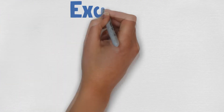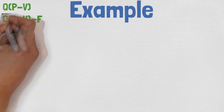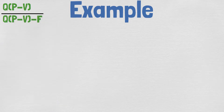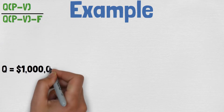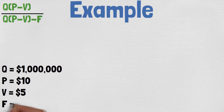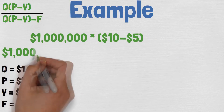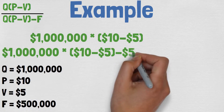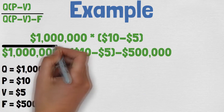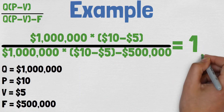Let's say that Company A wants to know their degree of operating leverage. They are selling 1 million products for $10 each. The variable costs are $5 and the fixed costs are $500,000. When we put all of these values into the formula, we get a degree of operating leverage of 1.11.